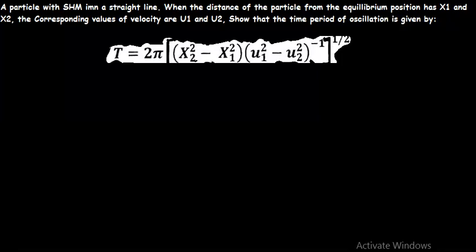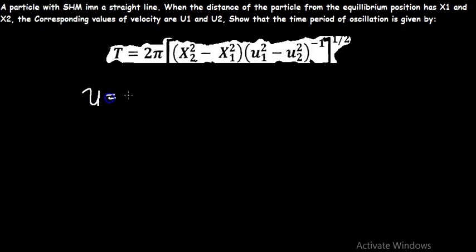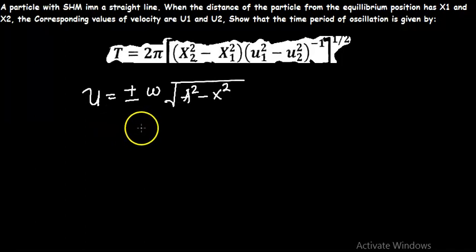In today's video we are going to be looking at some basic problems under simple harmonic motion. We are going to be deriving the period of simple harmonic motion using displacement and velocity ratios. In simple harmonic motion, the relationship between displacement and velocity can be expressed using this equation: v equals plus or minus omega times the square root of A squared minus x squared. Here, v is the velocity, omega is the angular frequency, A is the amplitude of the motion, and x is the displacement from equilibrium.